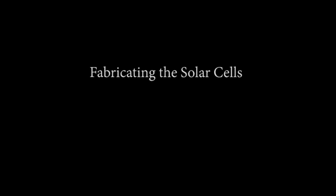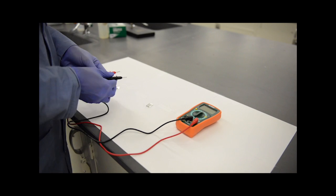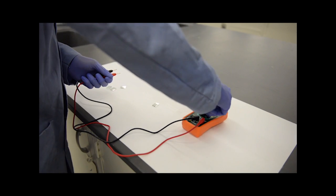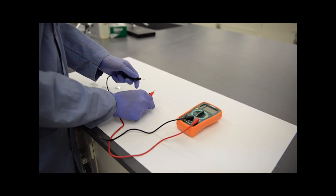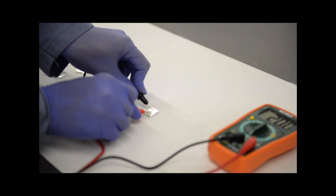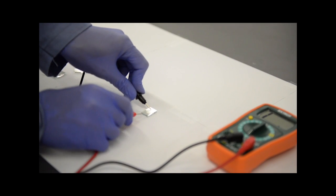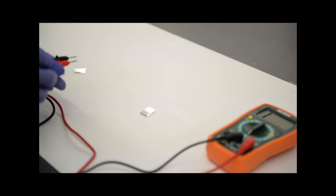In the first step, we will determine the conductive side of FTO glass. To determine the conductive side, we set the multimeter to resistance mode, plug the two leads into the multimeter, and measure the sheet resistance on each side using the probes. The uncoated side will not give any value.